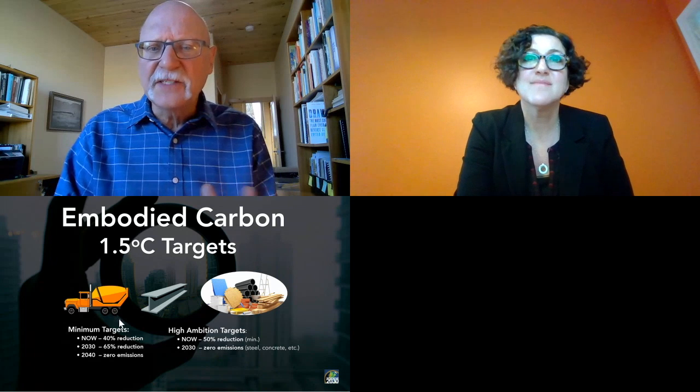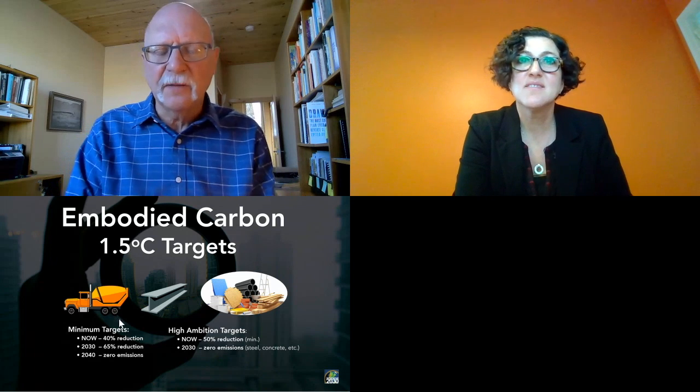Regarding embodied carbon averages: the structure — steel, concrete, and wood — accounts for about 50% of embodied carbon in construction materials and receives the most attention, particularly concrete and steel. The enclosure — roofing, siding, windows, and doors — accounts for about 30%. Interiors — carpeting, sheetrock, and similar finishes — make up the remaining 20%. We are doing embodied carbon modeling on many of our projects using great new software tools.